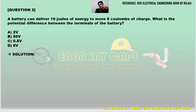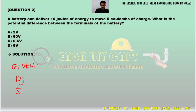Let's proceed to question number two: A battery can deliver 10 joules of energy to move 5 coulombs of charge. What is the potential difference between the terminals of the battery? The given values are: energy = 10 joules, charge Q = 5 coulombs.